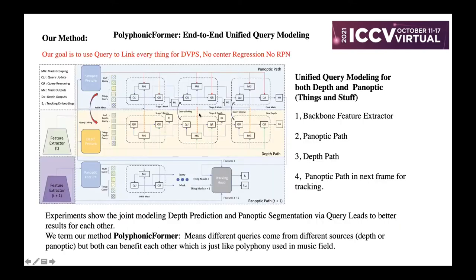Our work, PolyFormer, is an end-to-end unified query model for this task. Our goal is to use a query to link everything for DVPS — no center regression and no region proposal network. It contains four parts: a backbone feature extractor, then two paths — a panoptic path and a depth path. The panoptic path directly outputs things and stuff masks, while the depth path outputs the depth map. We also add an extra panoptic pass for next-frame prediction used for tracking. In this way, our network is one model to solve four tasks in a simple architecture.